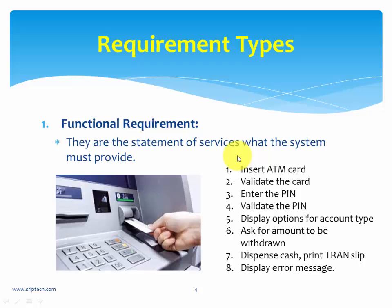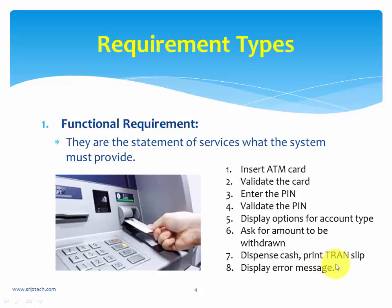Functional requirements describe system functions in detail — the various inputs, outputs, and expectations. For an ATM, it should allow you to insert a card, validate the card, prompt for a PIN, validate the PIN, display options like selecting a savings or current account, allow withdrawal, dispense cash, print a transaction slip, and display an error message if there is insufficient balance or an internal problem.